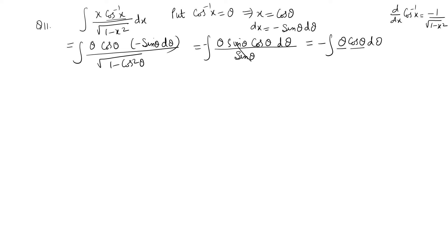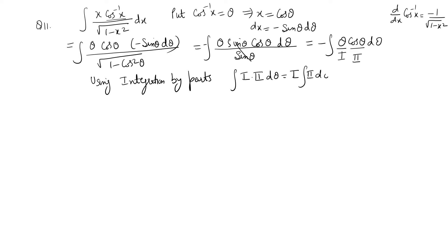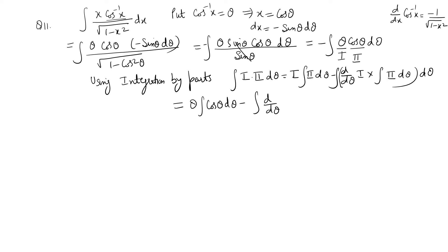After substitution, we have θ (algebraic) and cos θ (trigonometric). Taking θ as the first function and cos θ as the second, and applying integration by parts: first × integral of second minus integral of (d/dθ of first × integral of second) dθ. The integral of cos θ is sin θ, and there is also a negative sign from the substitution, which I take outside.